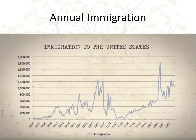Before 1880, immigration was mostly from northern and western Europe. From 1880 to 1915, eastern Europe and southern Europe began pouring in. From 1970 to today, it's mostly Asian and Latin American, including Mexico. The spike in 1988 is explained by the Immigration Reform and Control Act of 1986, in which roughly 2.7 million undocumented foreign residents obtained legal immigration status under the amnesty program.